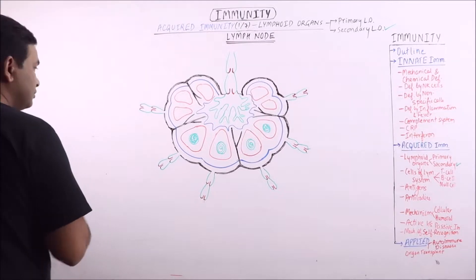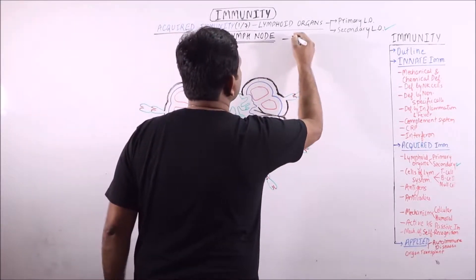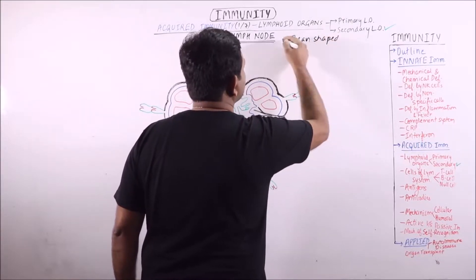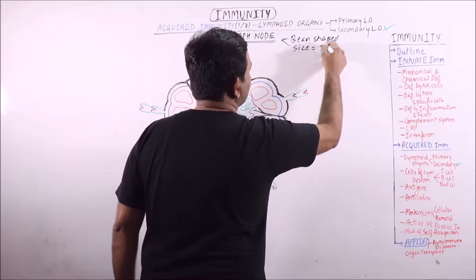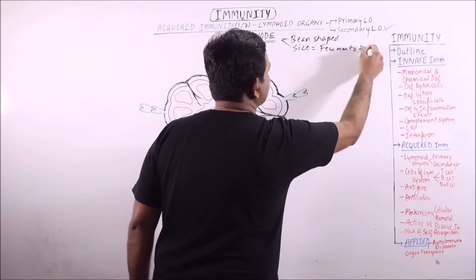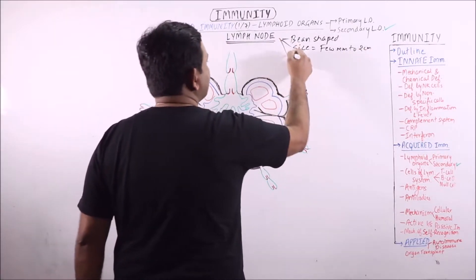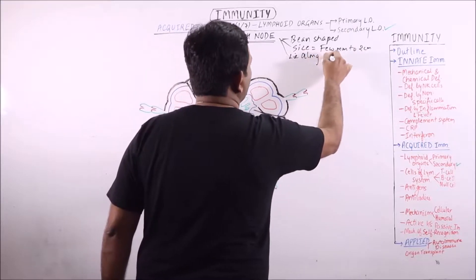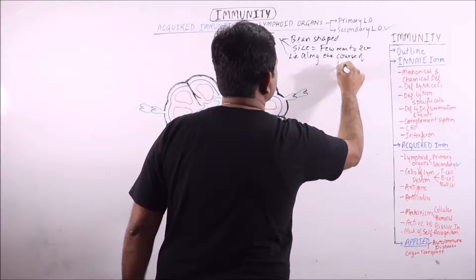This is the structure of a lymph node. Lymph nodes are bean-shaped, having a size between a few millimeters up to 2 centimeters, and they lie along the course of lymphatics.